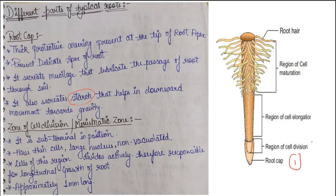The second zone is the region of cell division, also called the meristematic zone. Here, meristematic cells have high potency — meaning the cells have high power and can continuously divide. This region is sub-terminal in position, meaning just adjacent to the tip. The cells are thin, have large nuclei, and are non-vacuolated. They divide actively. The length of this meristematic zone is approximately 1 mm.